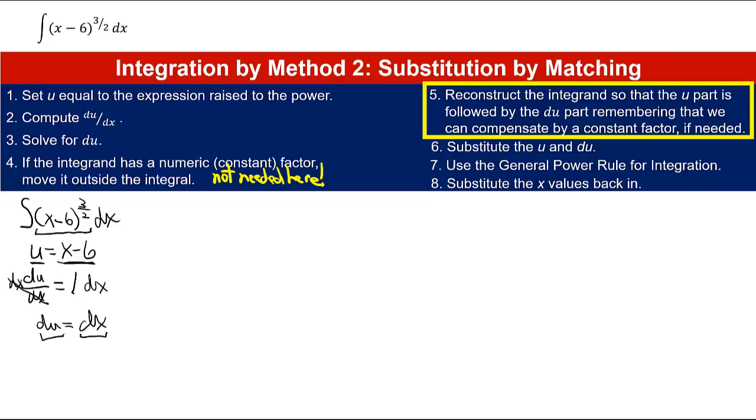So if this is the u part here, and this is the du part, then in fact 5 is already satisfied. The du part is at the end, and that's what we're trying to do. We're trying to get the entire du part at the end. Step 6 says to substitute. You plug the u value in, and the du value in, and what you have to remember is that this substitution is based on what you let u be equal to.